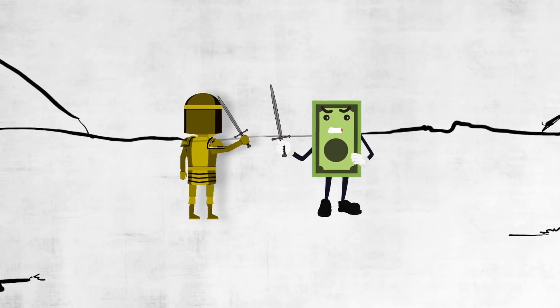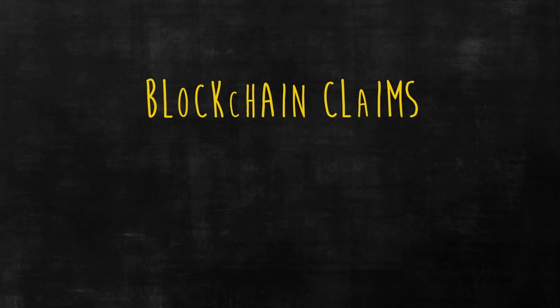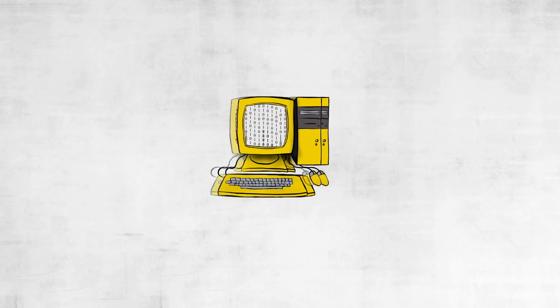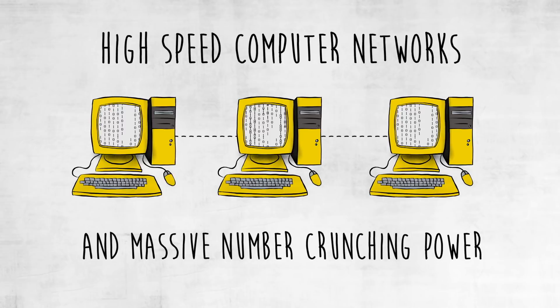On the battlefield and in finance, there are a lot of ways things can go wrong. But here's the headline. Blockchain claims to have solved the Byzantine generals problem using unique properties of high-speed computer networks and massive number-crunching power.